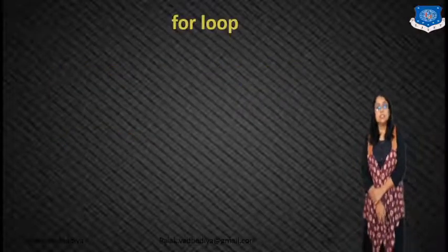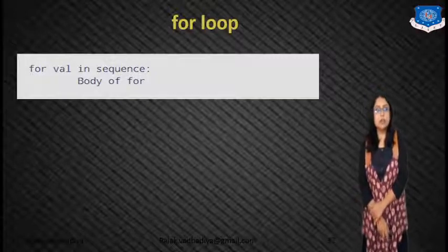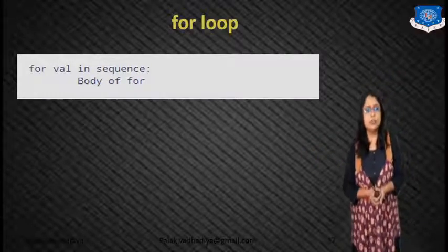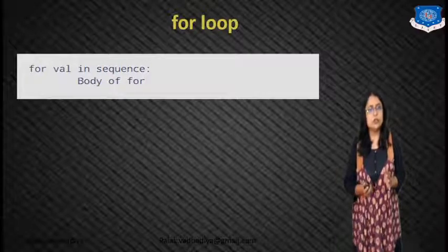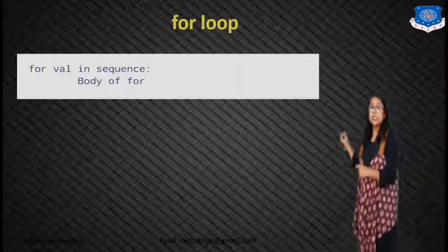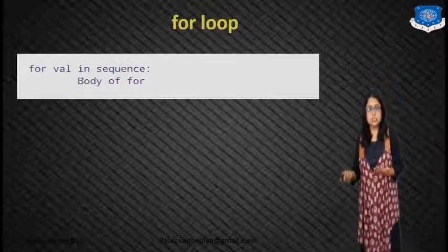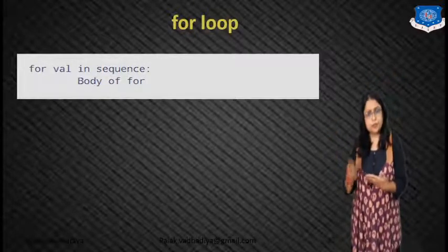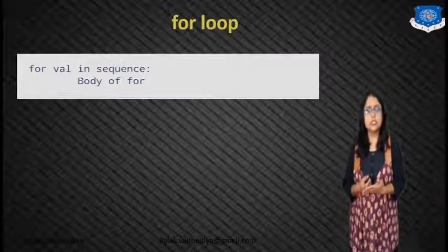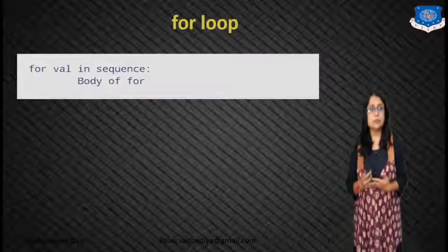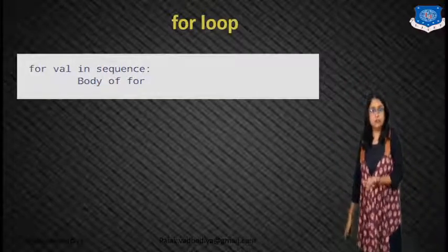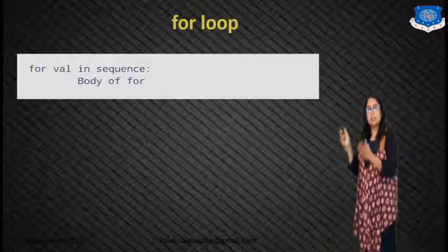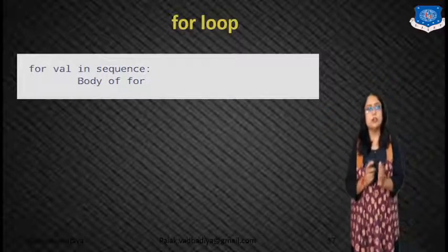First of all, we will see the syntax that we will use in our for loop. Here we will write 'for val in sequence'. Val is a variable - you can write any name A, B, C, D, whatever you want. In the sequence, you can consider a list or some range. You can use some sequence like a list or dictionary when we want one by one elements from it. That is the body of for.